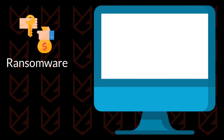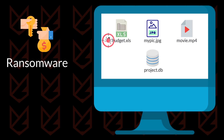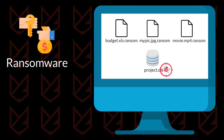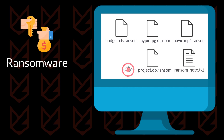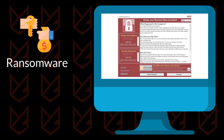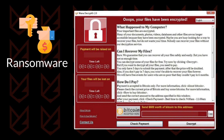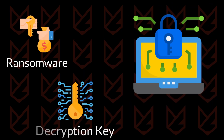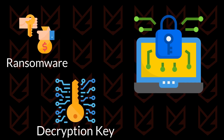The ransomware then locates specific files and locks them using robust encryption algorithms. Then it drops ransom notes, asking users to pay a certain ransom to get the decrypting tool. The encrypted files cannot be opened without the key that the cybercriminals provide. There are some free decryptors available for popular ransomware, but they rarely work.